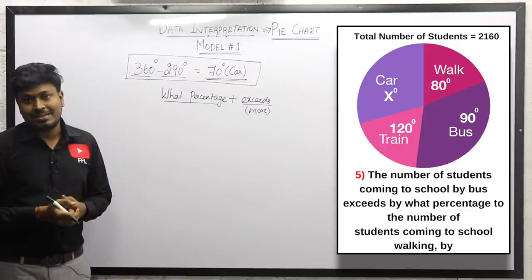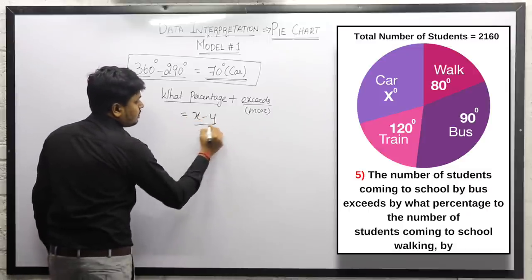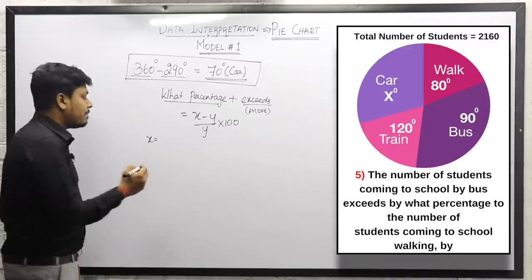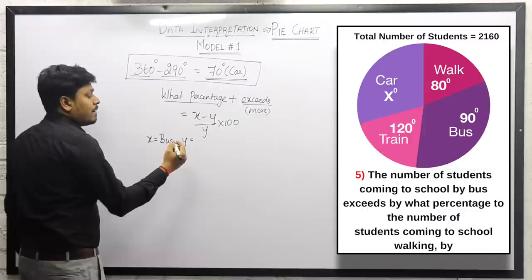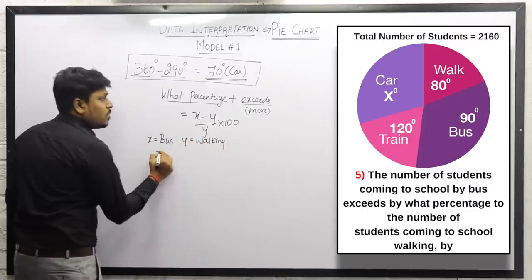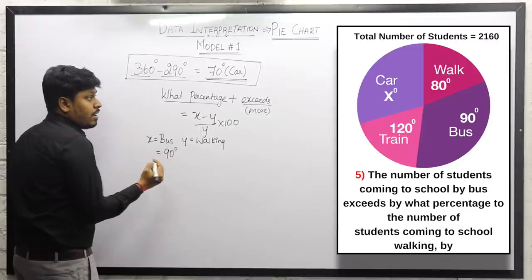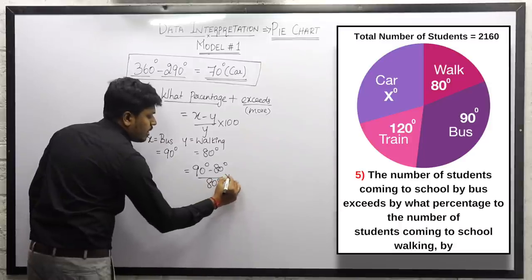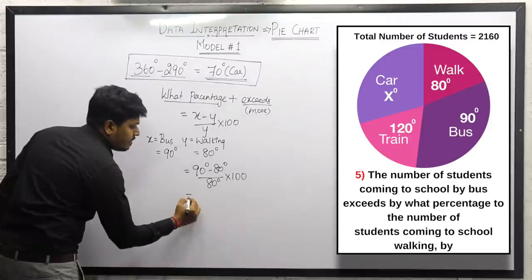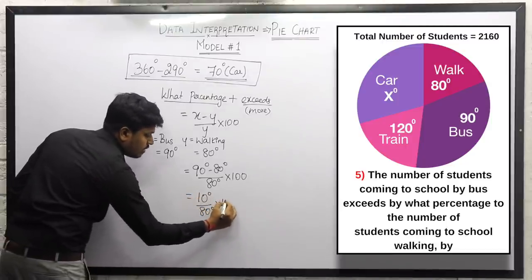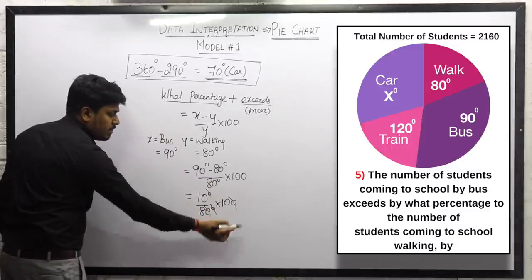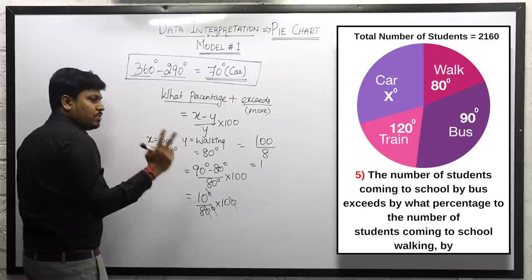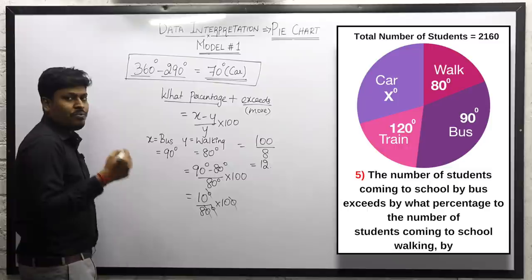The formula for 'x is what percentage more than y' is: (x minus y) divided by y, multiplied by 100. Here x is bus (90 degrees) and y is walk (80 degrees). So (90 minus 80) divided by 80, multiplied by 100 = 100 divided by 8 = 12.5 percentage.